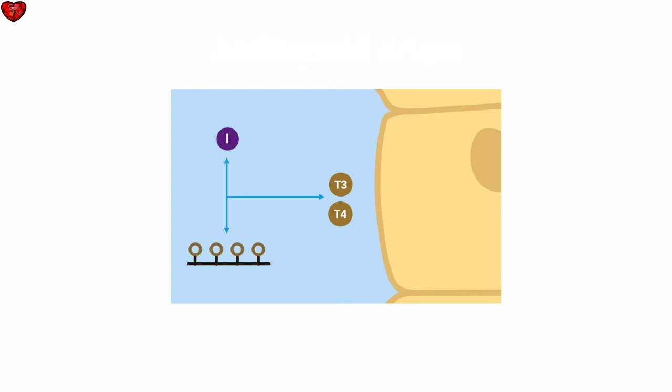Normal thyroid hormone production involves the coupling of iodine to a thyroglobulin molecule, which is then converted to T4 or T3 and secreted into the bloodstream.